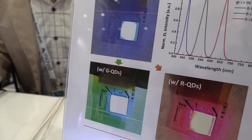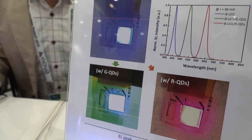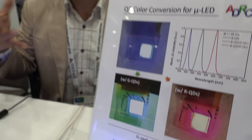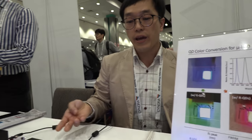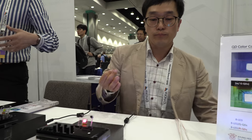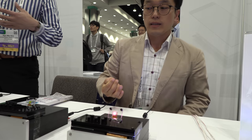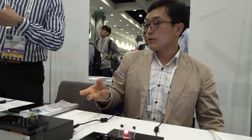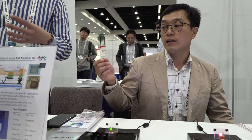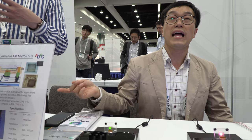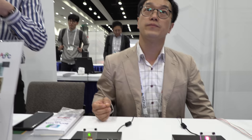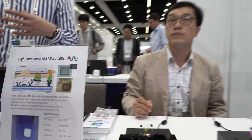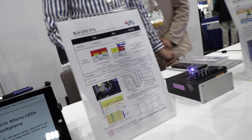You have blue, green, red — yes, you can make green, red, blue. It depends on the thickness, because we are using a blue light source.